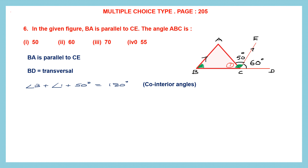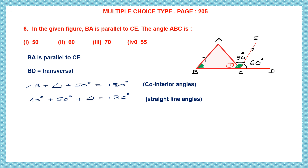We have to find angle B. First, we need to find out angle 1. Look at these three angles: 60 degrees plus 50 degrees plus angle 1. They are all on the same straight line, so straight line angles add up to 180 degrees. So 60 degrees plus 50 degrees plus angle 1 equals 180 degrees — they are straight line angles.